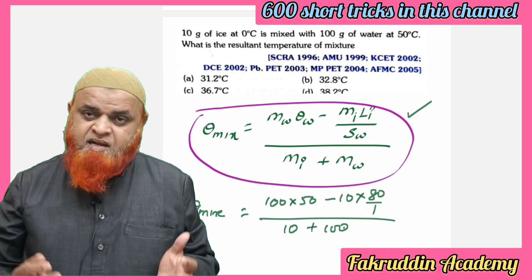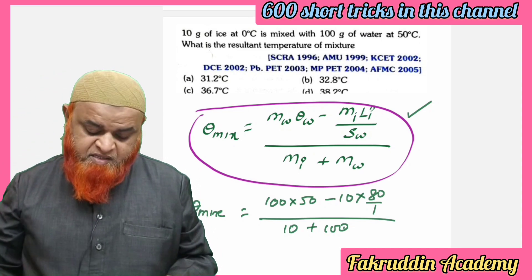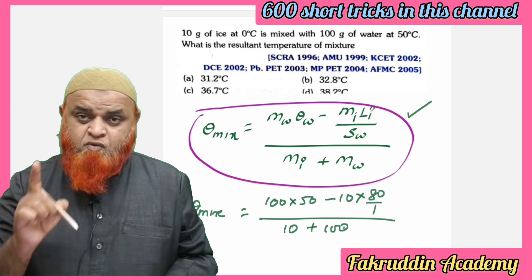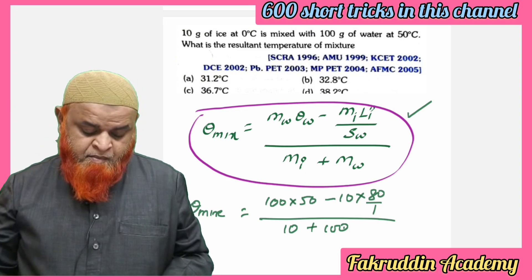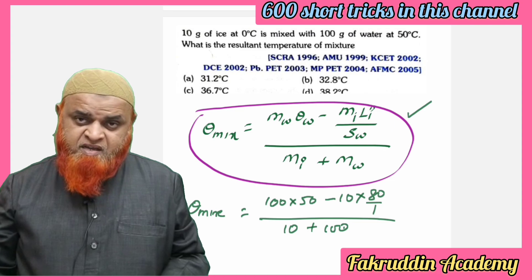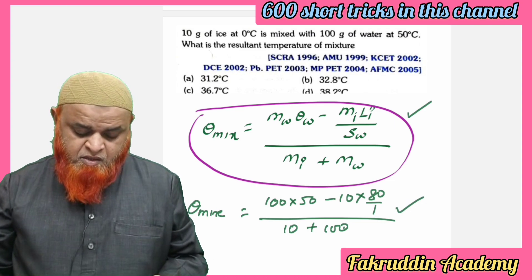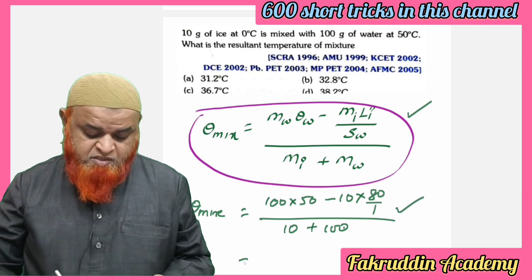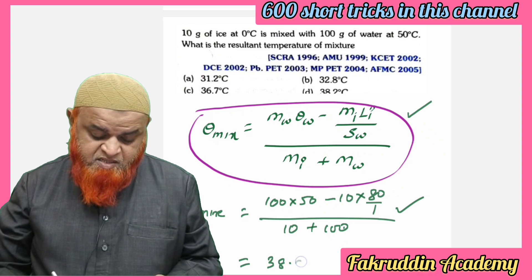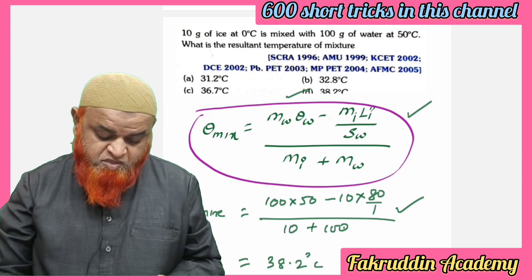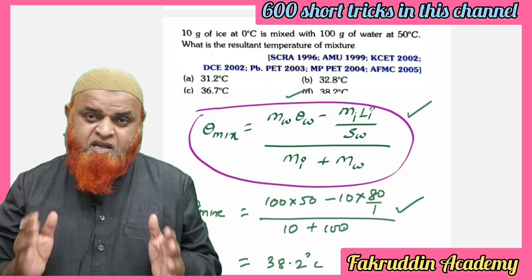Then mass of ice, latent heat of ice is 80, divided by specific heat of water which is 1 gram per cc, and mass of ice plus mass of water. Just substitute this, and finally we get the answer as 38.2 degree Celsius, which is option D.